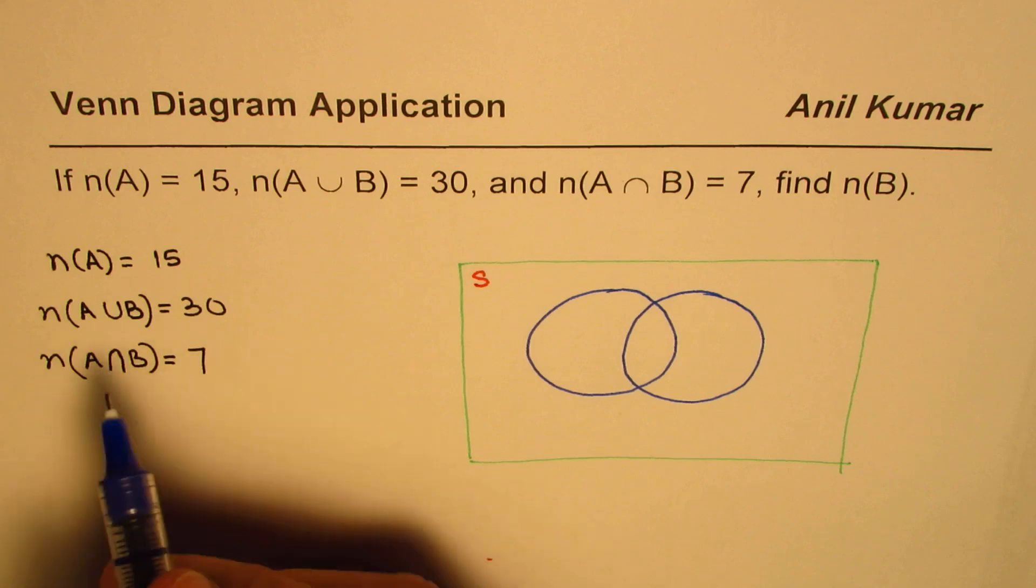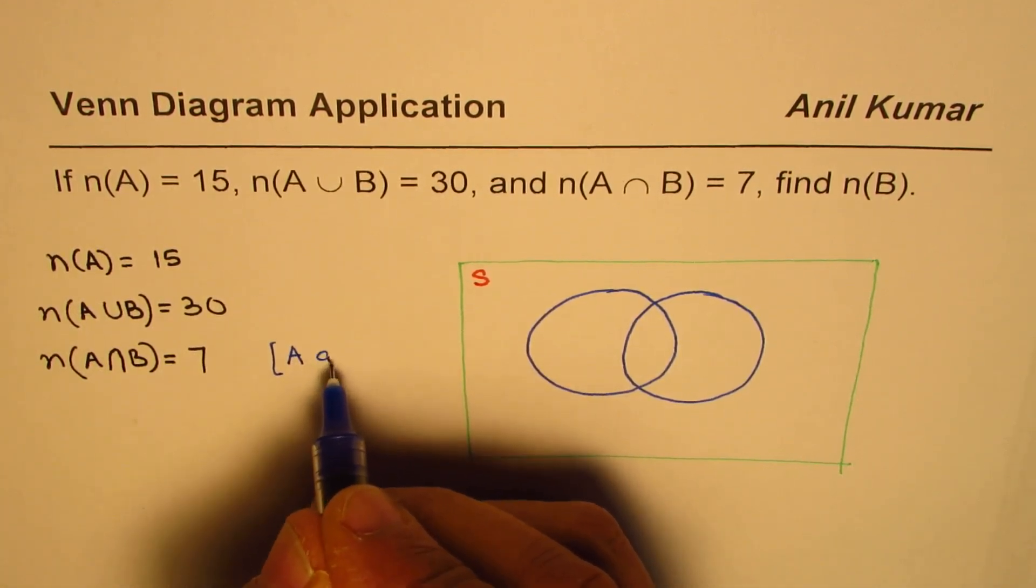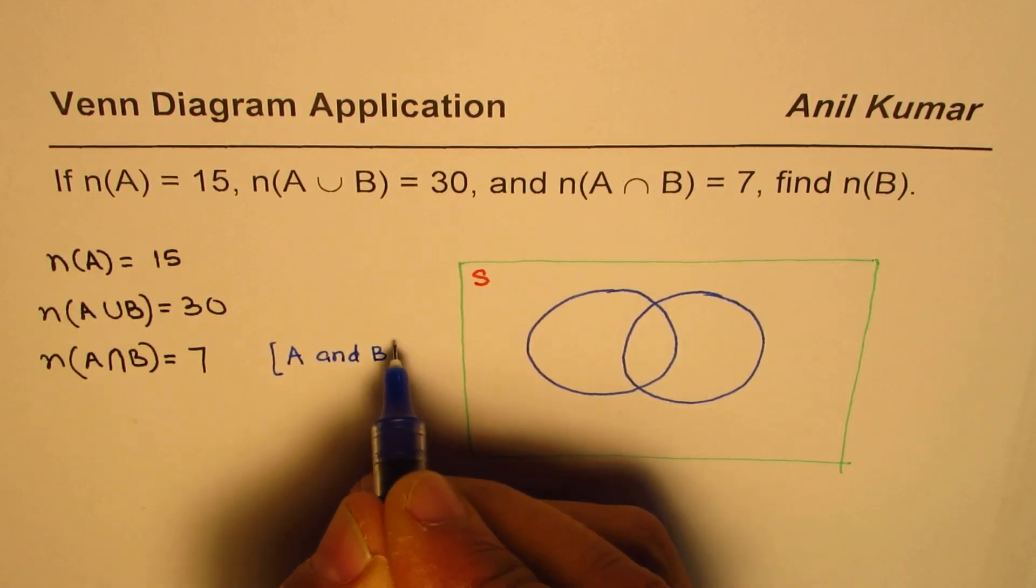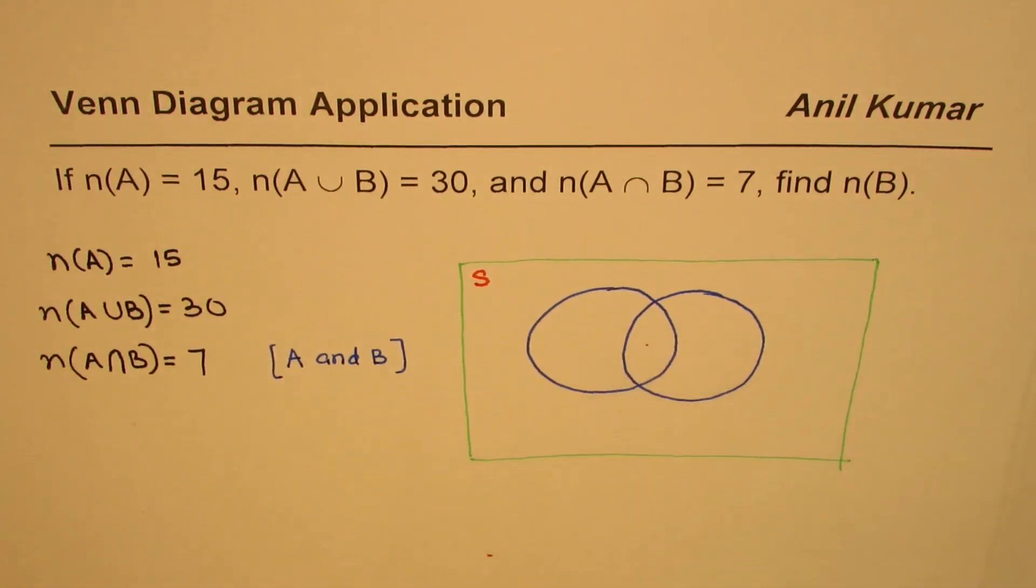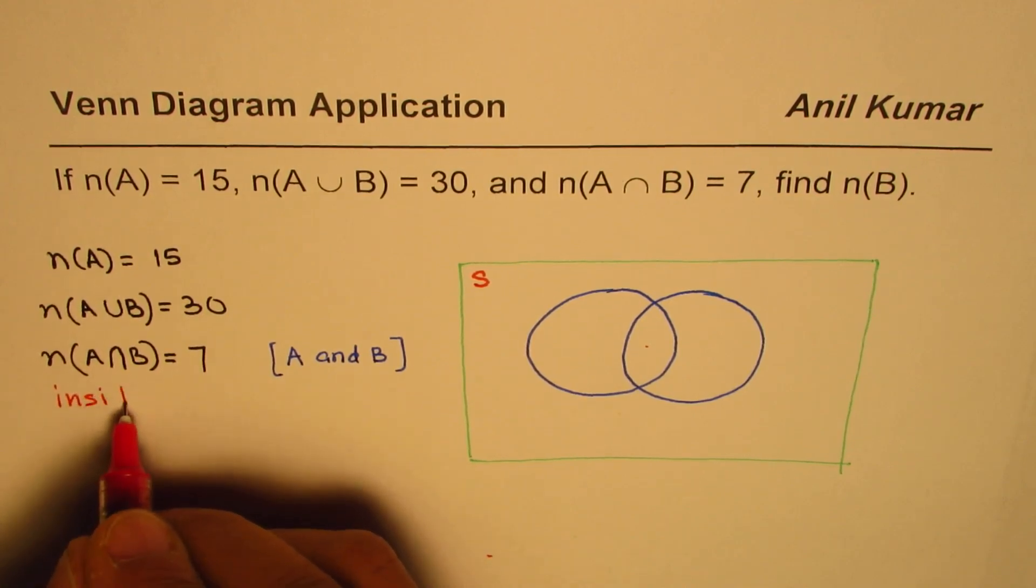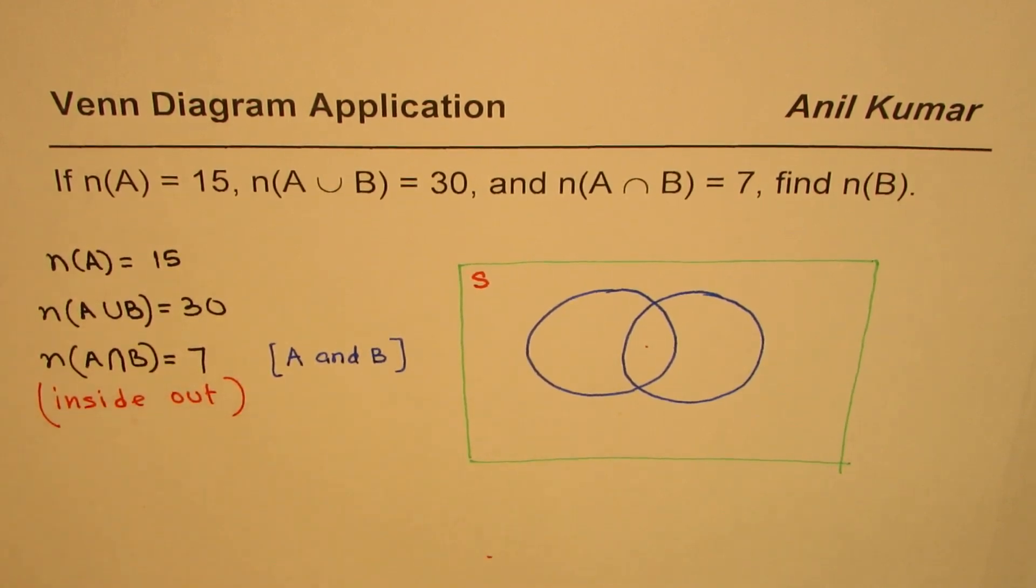That means A and B. This means A and B. It is intersection. We call it intersection. That means this portion, inside. So, always start from inside out. That is the strategy.